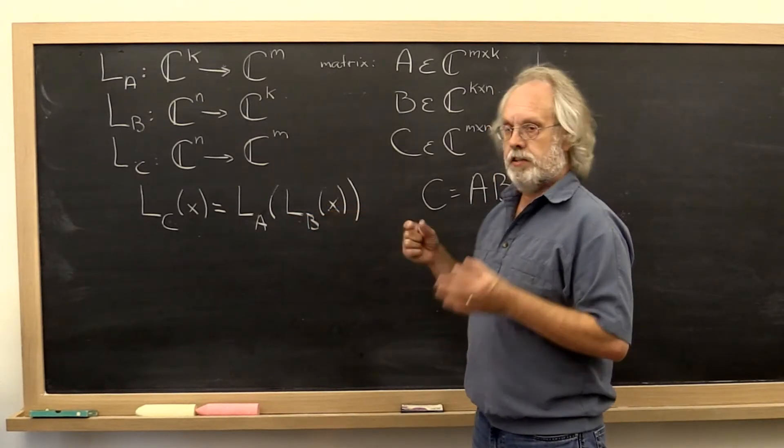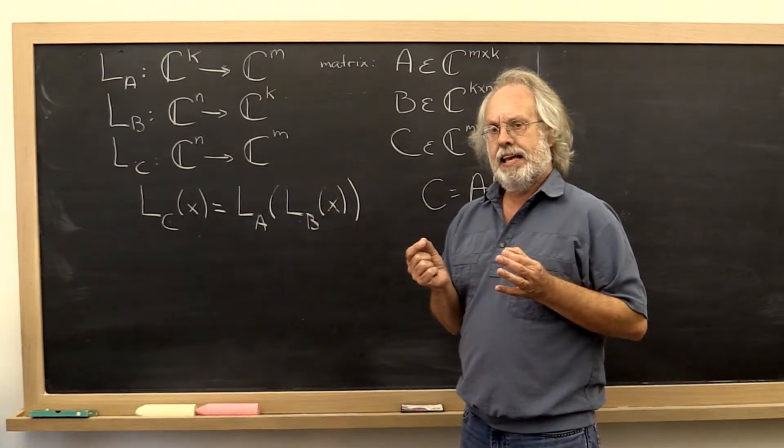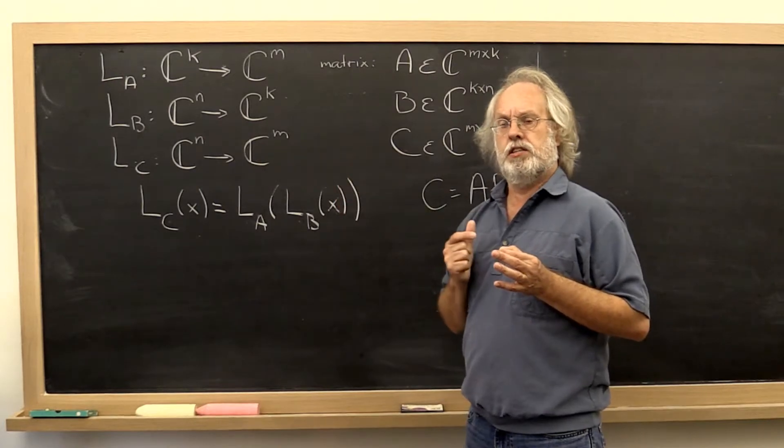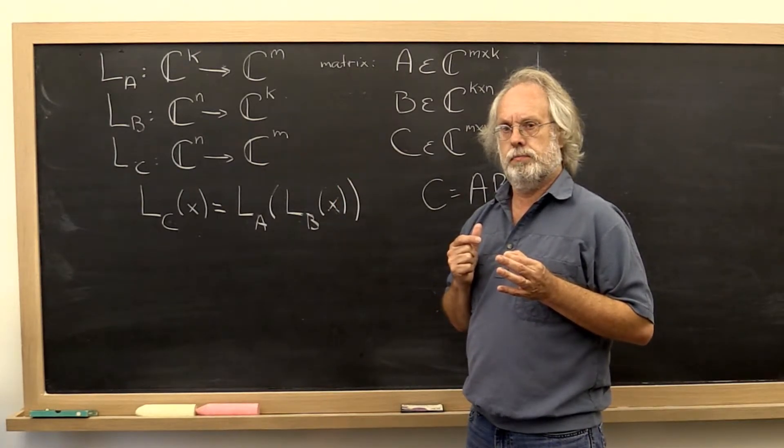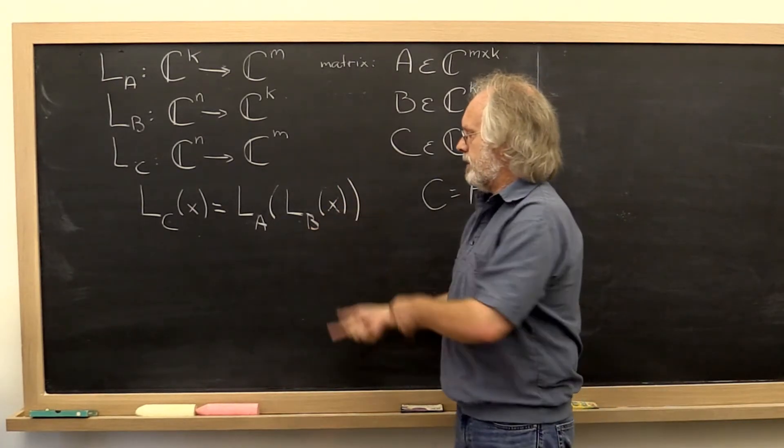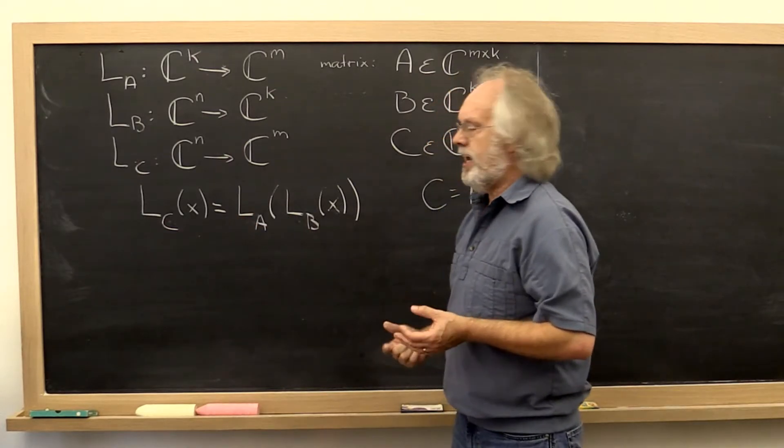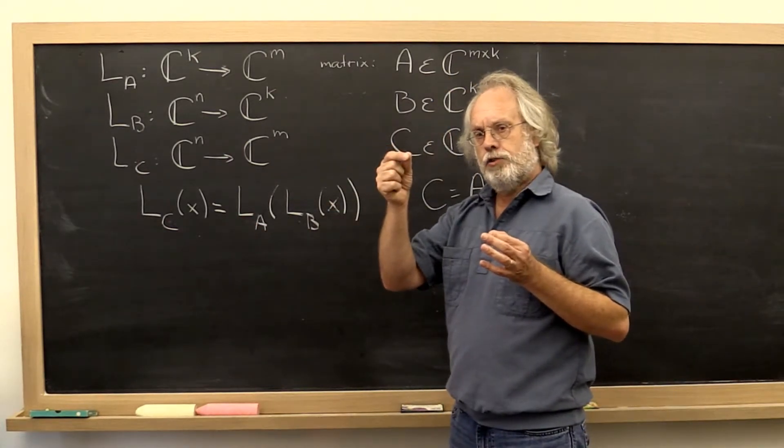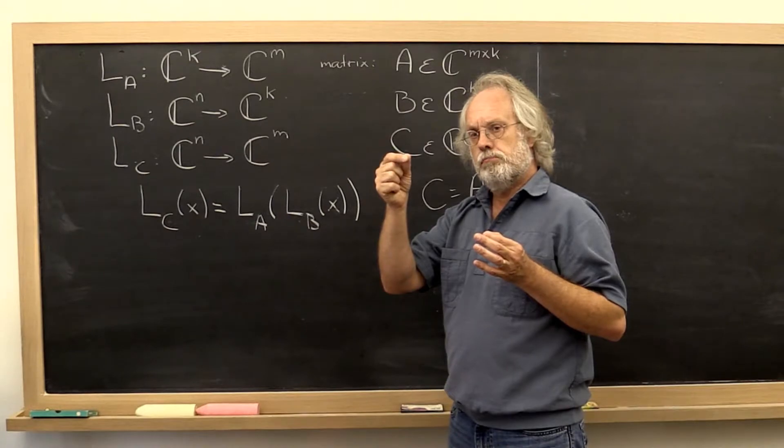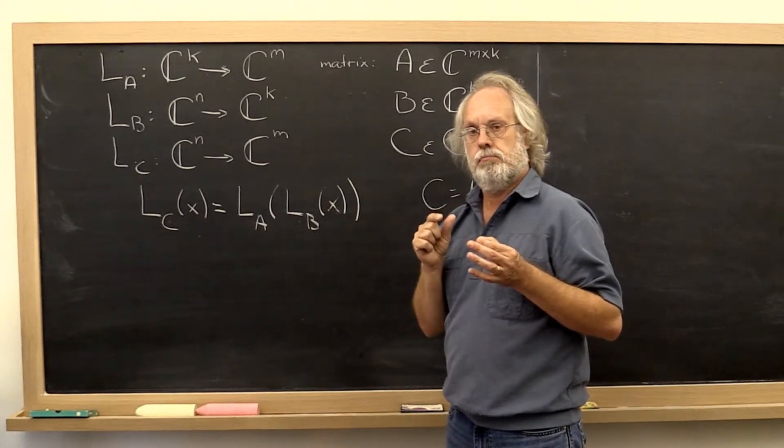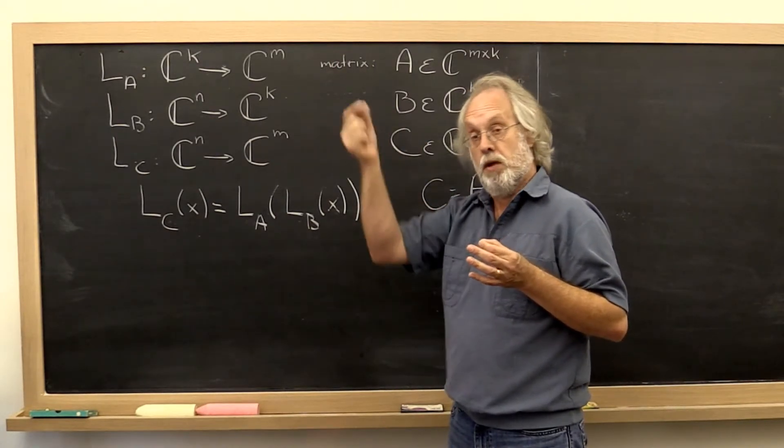L_B takes a vector x and at most stretches it a certain amount. Then that result vector is fed into L_A and is transformed into a new vector, possibly stretching it some more or maybe even shrinking it.